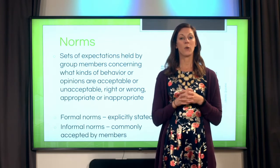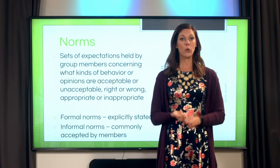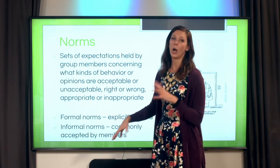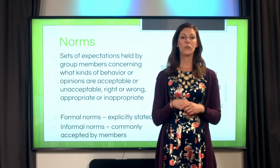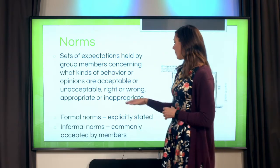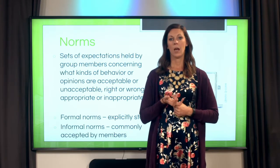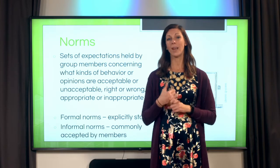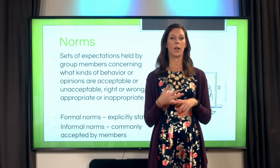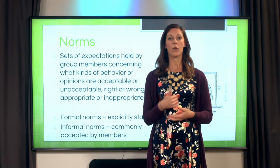For example, if you're a member of a sports team, there are specific rules you follow as part of the game — you probably wear a uniform. Those are considered to be formal norms. Informal norms are those adopted by a particular group and are more socially agreed upon than explicitly stated. In a workplace, formal norms are things outlined in your employee handbook — like dress code, sexual harassment policies — things that in some cases are governed by law and explicitly stated when you sign your contract.